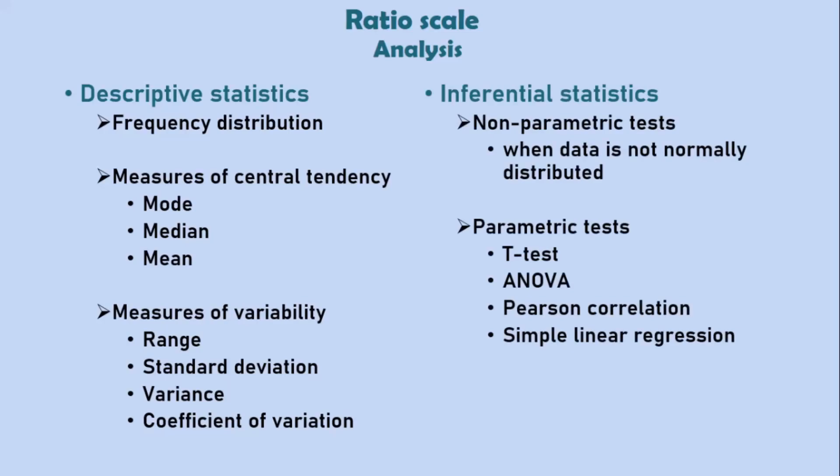On a ratio scale, we can also perform inferential statistics including parametric tests like t-test, ANOVA, Pearson correlation. Also, in cases where the data is not normally distributed or does not meet certain assumptions, we can perform non-parametric tests for ratio scale variables.